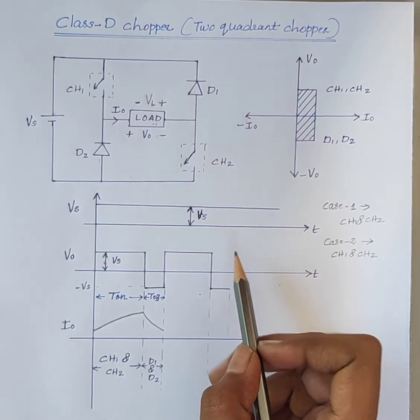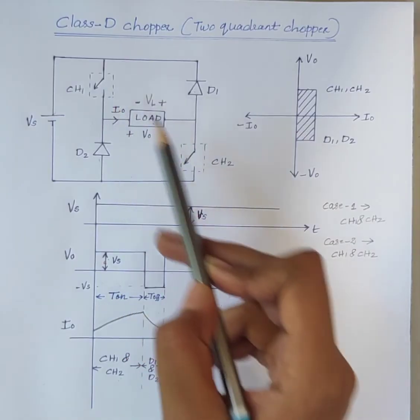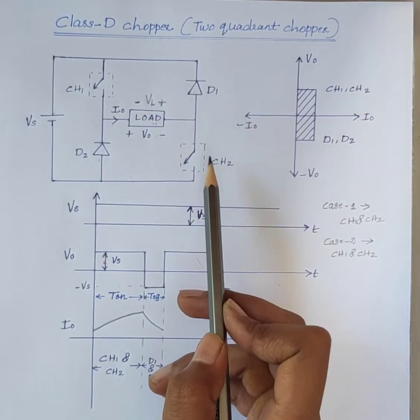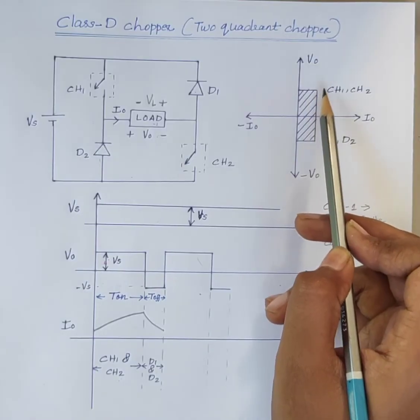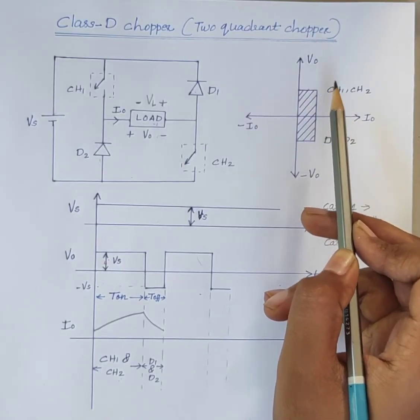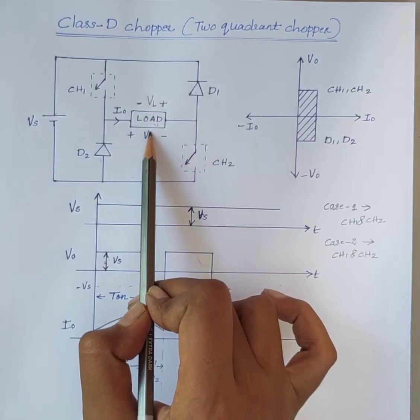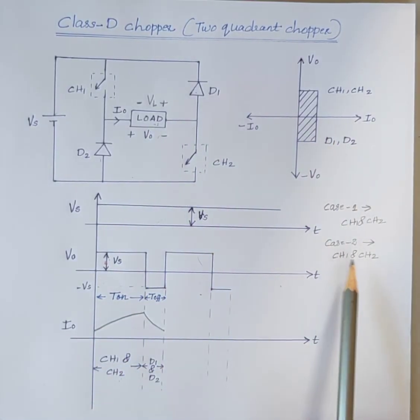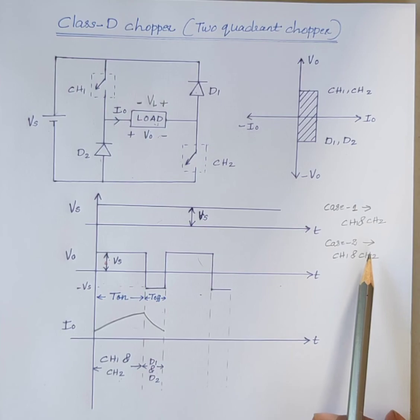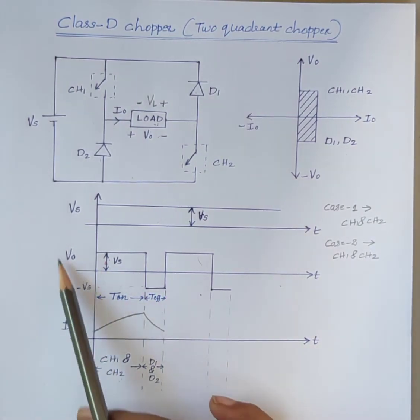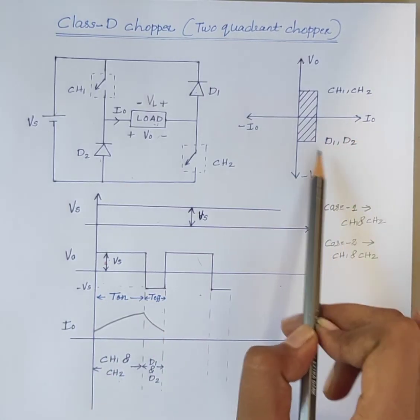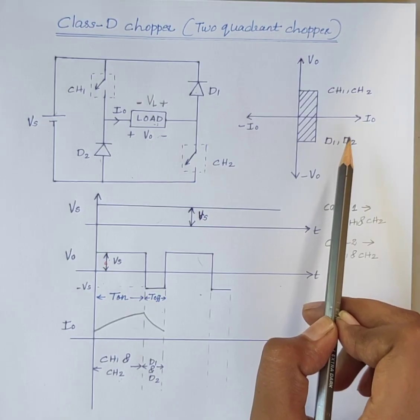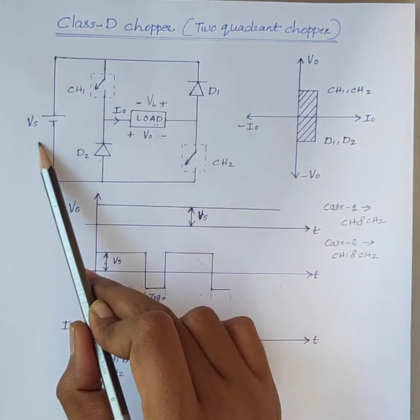We can conclude that when CH1 and CH2 are on, the output voltage V0 is positive and the output current I0 is positive. When CH1 and CH2 are off during this period, the output voltage is negative and the output current is positive, representing fourth quadrant operation where power flows from load to source.